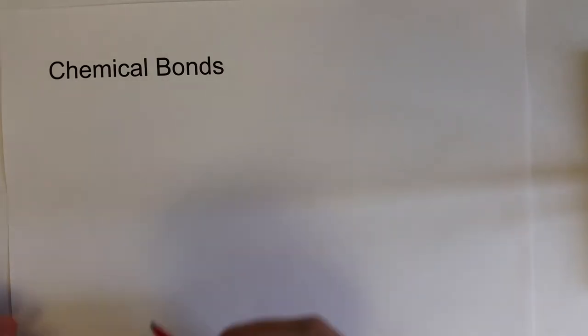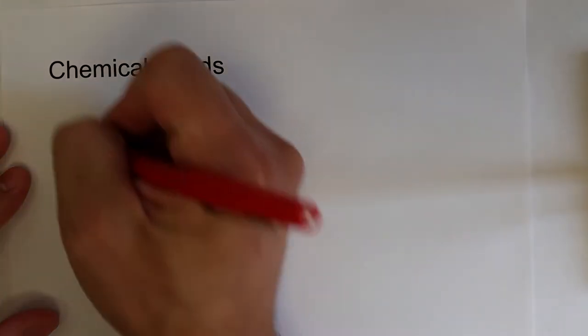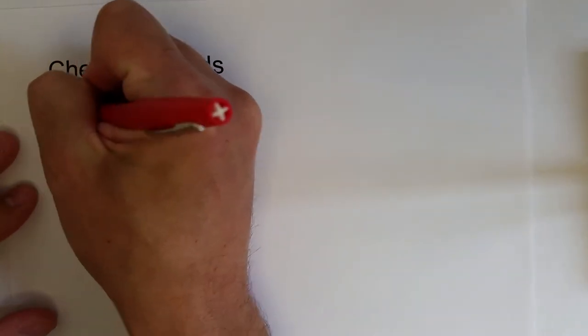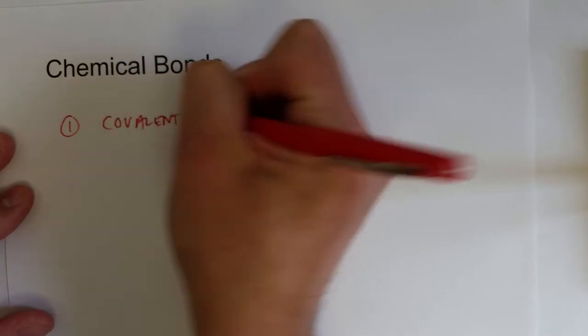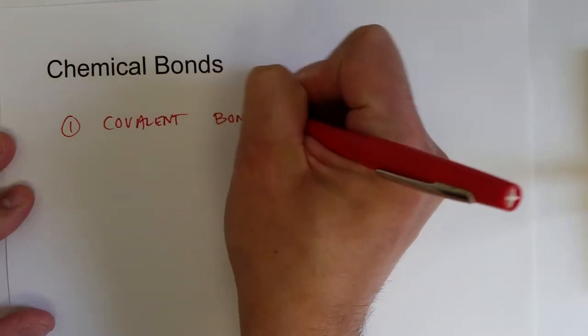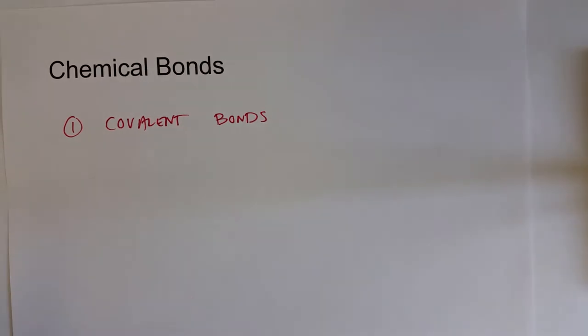So it turns out that there's two types of ways in which two or more atoms can come together to form compounds. The two types of bonds are covalent bonds and the ionic bond.